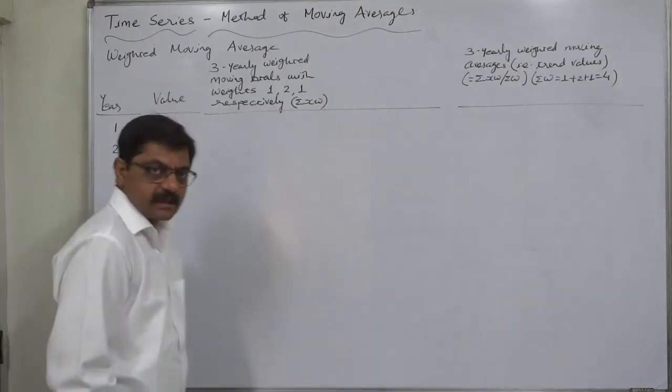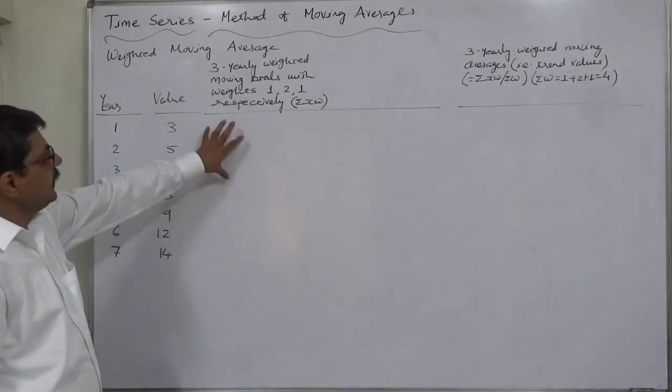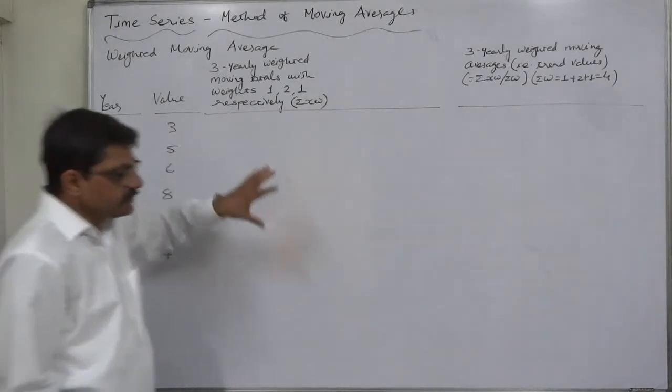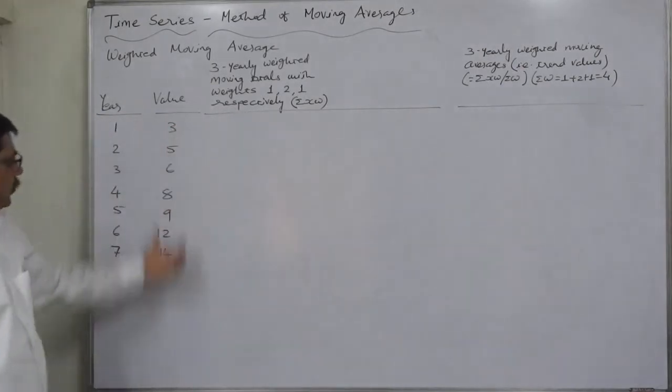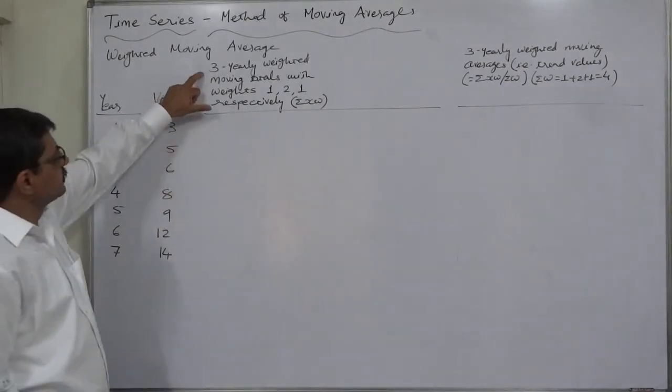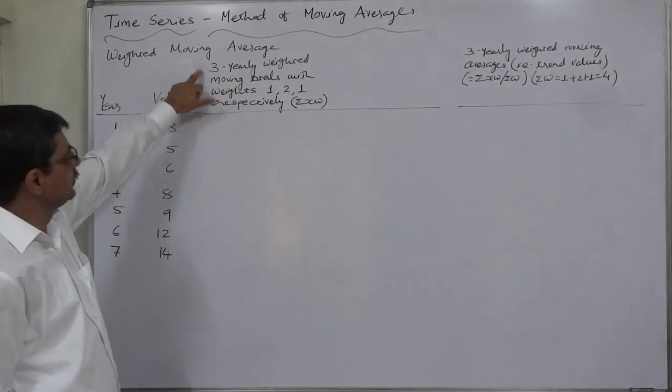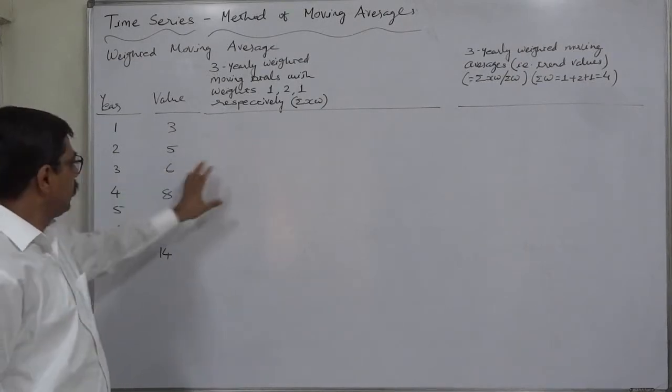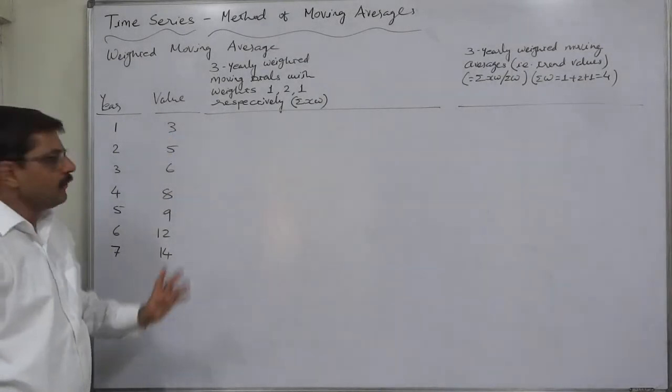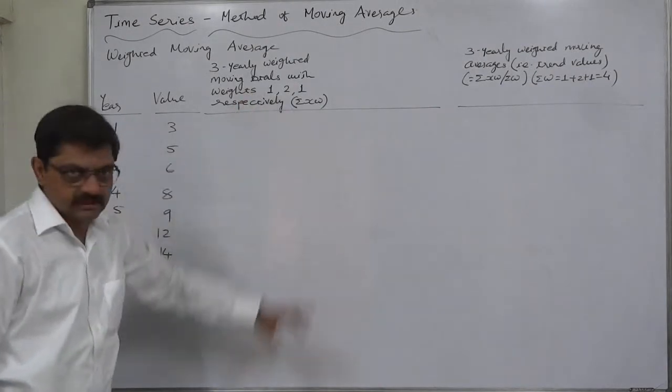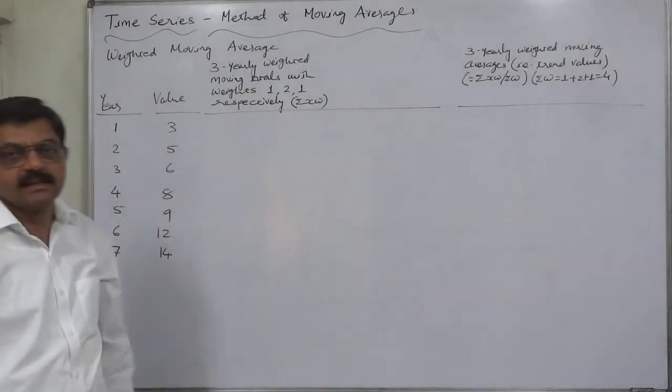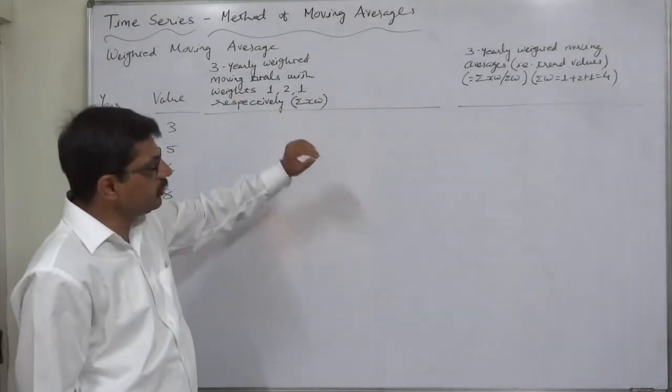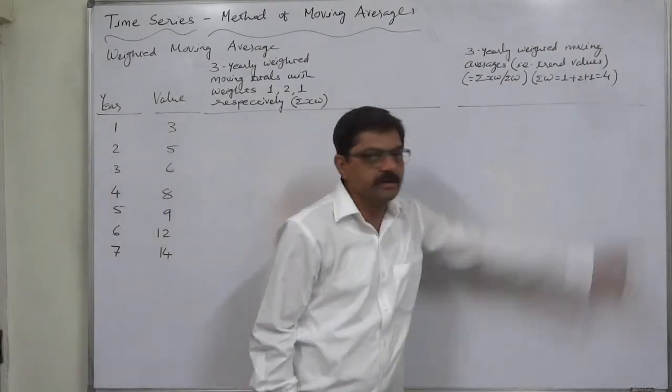Ultimately sigma xw upon sigma w gives the weighted mean. In the same way we can find the weighted moving average. As we know, in moving average we need moving totals according to the period of cycle decided by us. Instead of merely the summation of the values, we multiply them by respective weights and then we get the summation. That is something like our sigma xw.